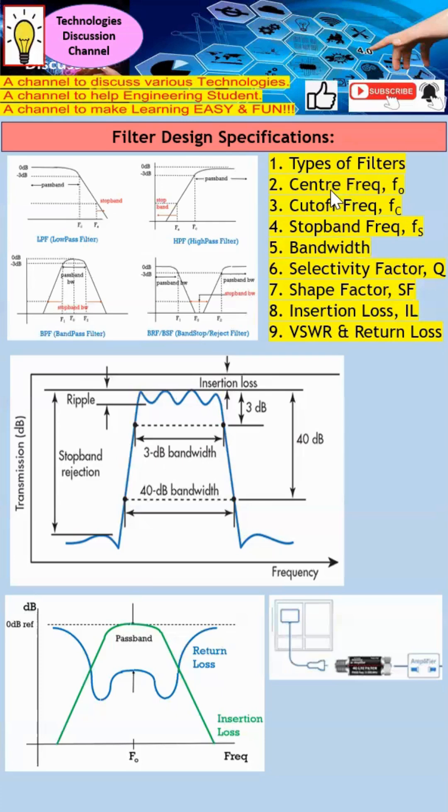Next, cutoff frequency. Cutoff frequency definition is basically we know the maximum point. For example, this is the maximum point of S21. When the signal reduced by 3 dB, this is the frequency that we actually denote as cutoff frequency.